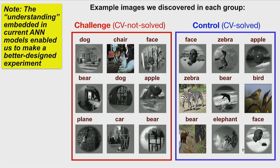The understanding embedded in these models of what makes images hard is going to allow us to design better experiments. Rather than going in saying 'I think clutter is important, let's show clutter to monkeys' and spending several monkeys' lives and lots of money to measure clutter, we're going to let the models tell us what they're struggling with. The models tell us: test these images because we find them hard — we don't know why — compare them to the brain and see if you can help us.